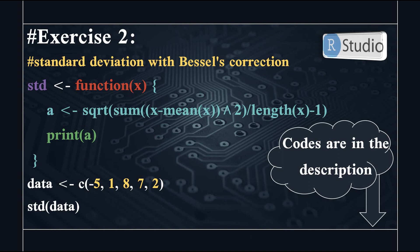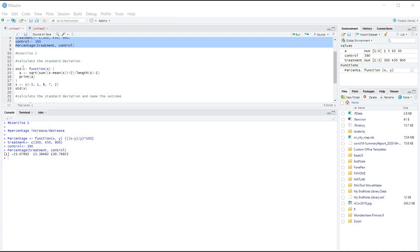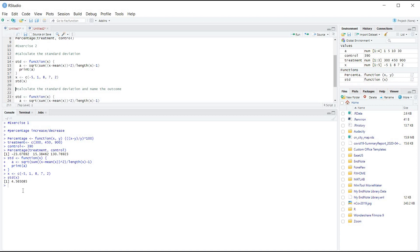So let's go to R Studio and run this code. So first, let's create our standard deviation function. Then let's assign these five numbers to X. And after that, we use the standard deviation function we just created and calculate the standard deviation. And it's 4.56.